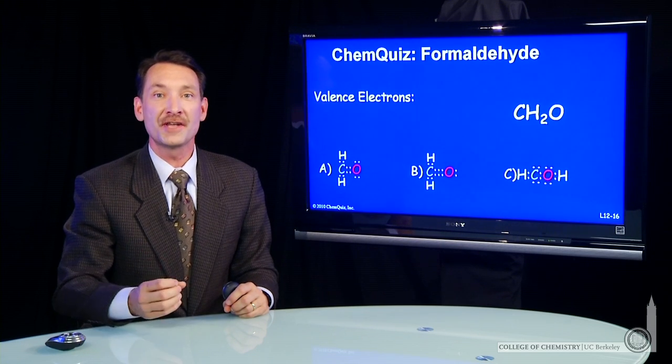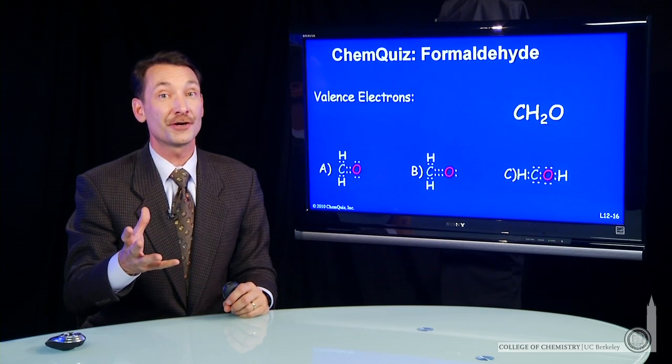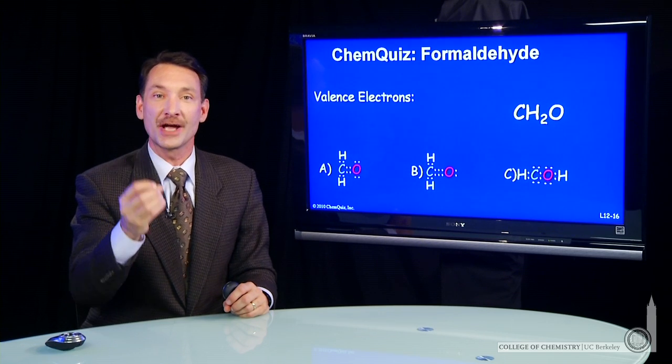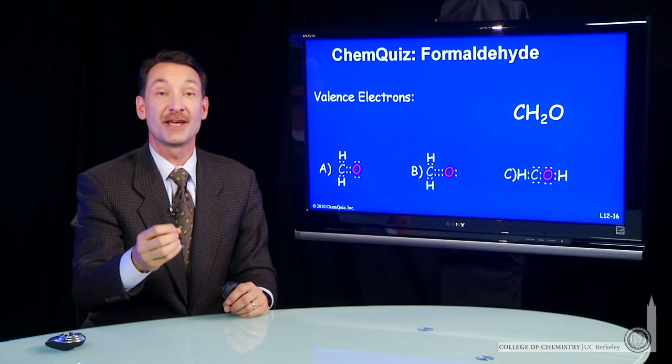We're writing the Lewis electron dot structure for formaldehyde. Whenever you write Lewis electron dot structures, you first have to get the correct number of electrons. So you add up the valence electrons for all the participating atoms.